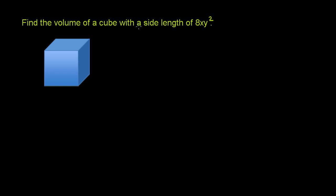Find the volume of a cube with a side length of 8xy squared. So we have a cube right here, and for a cube, all of the sides have the same length—each of them have length 8xy squared.